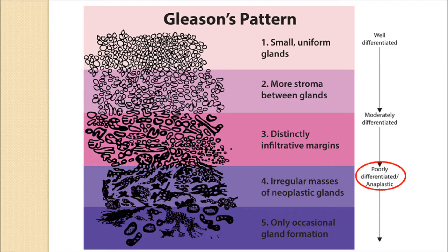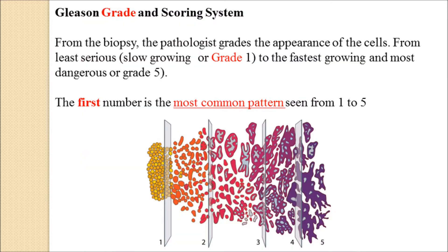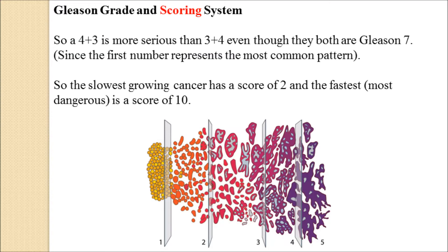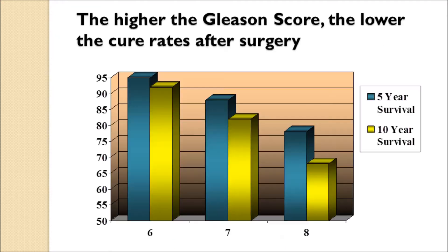Gleason then came up with a scoring system. From the biopsy, the pathologist grades the cells from 1 to 5 based on how mutated they look, and the first number — the most common pattern seen — is written down. Then the cells are graded a second time; the second number is the second most common pattern. These two numbers are added to generate a Gleason score. The lowest possible score is 1 plus 1, or 2. The worst score would be 5 plus 5, or 10, representing the most dangerous and most mutated cancer.